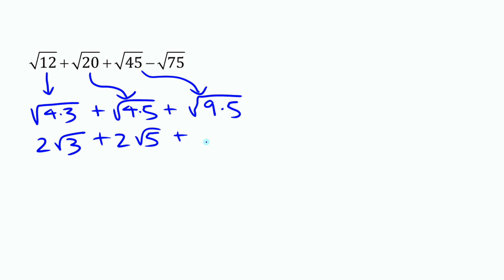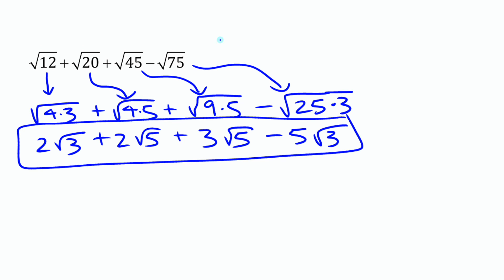Which is going to leave you with root 9 is 3, so 3 root 5. And then this last one here, minus root 75. The biggest perfect square factor in that is 25. 75 is 25 times 3. Square root of 25 is 5, and the 3 is going to stay underneath that square root sign. This expression is equivalent to this one.